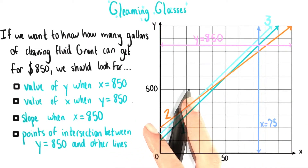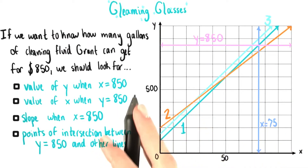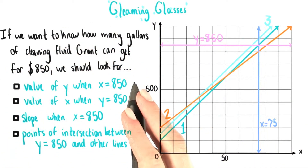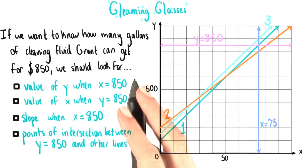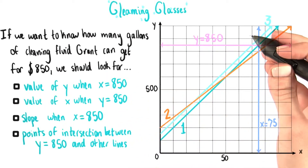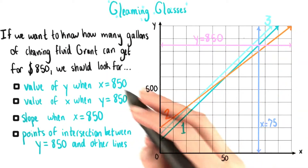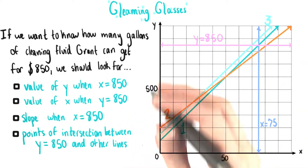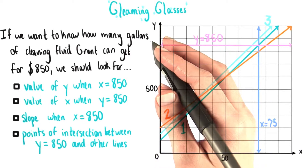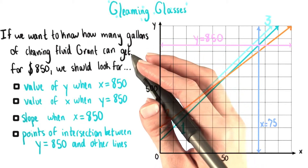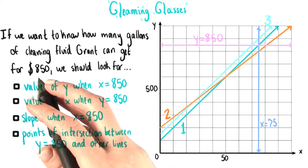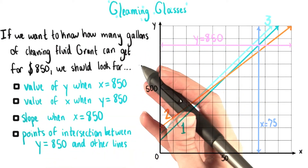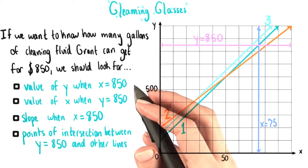Let's quadruple check that you fully understand the connection between Grant's situation that we're talking about, the graph that we've drawn, and the equations that we're going to use. If we want to know how many gallons of cleaning fluid Grant can get for $850, what should we look for?